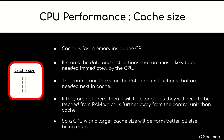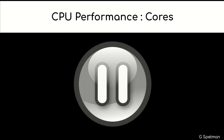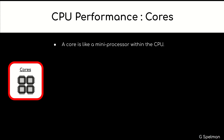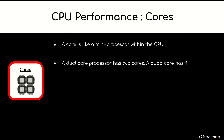So a CPU with a larger cache size will perform better, all else being equal. CPU performance — number of cores: a core is like a mini processor within the CPU. A dual core processor has two cores; a quad core has four. Cores may share resources such as level 2 and level 3 cache, depending on the design.